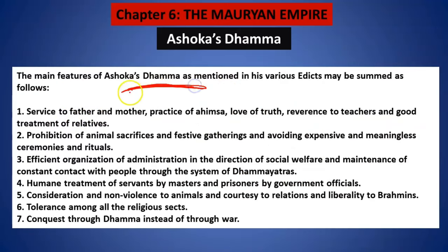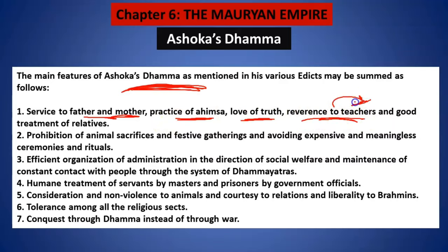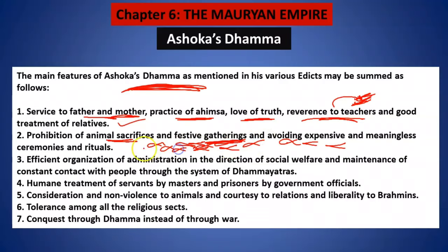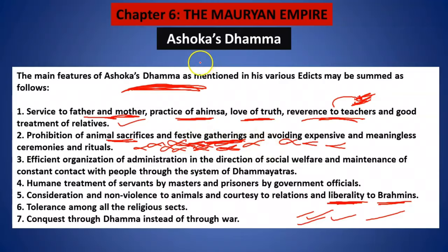The main features of Ashoka's Dhamma: you should serve your father and mother; we all should practice Ahimsa; we should love truth and never lie; there should be reverence for teachers; we should give good treatment to relatives; we should avoid animal sacrifices, festival gatherings, and meaningless ceremonies and rituals. He was against such Brahmanical activities, but that does not mean he was against Brahmins — he was always giving liberty to Brahmins. He was against superstitions and told people to be rational and logical.